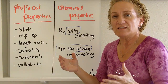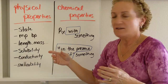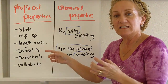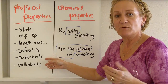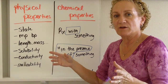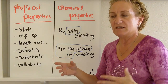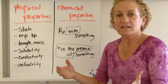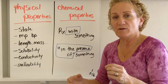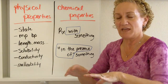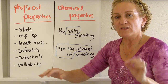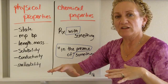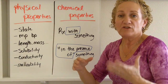Physical properties are things you can tell with your senses: the state of an object — solid, liquid, or gas — its melting point, boiling point, length, mass, volume, solubility, conductivity, and malleability. Malleability is something many people don't know. If you take a Jolly Rancher and hit it with a hammer, it shatters — it's not very malleable. But banana Laffy Taffy, when hit with a hammer, can be made into a thin sheet — it's very malleable. Malleability is the ability to be pounded into a thin sheet, and that's a physical property.